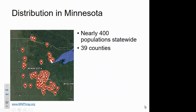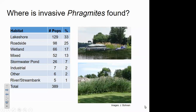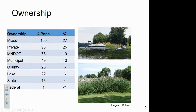To date we've found nearly 400 populations statewide across 39 counties, shown with red symbols on our distribution map. We found a real diversity of habitats: our highest proportion were lakeshores, followed by roadsides, wetlands, and other habitat types. And unsurprisingly, given this diversity of habitats, there is a real diversity of land ownership — a lot of private lands, agency lands, MnDOT roadways, municipal, and others.